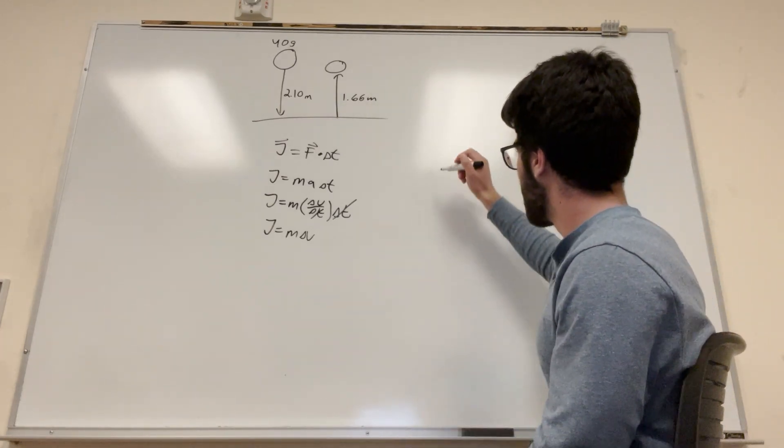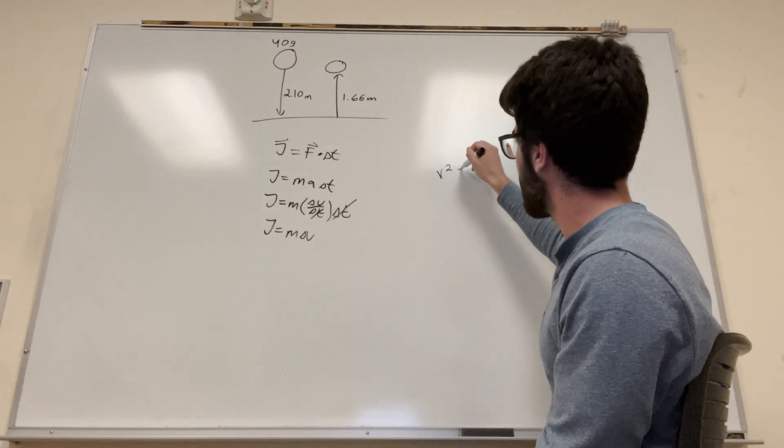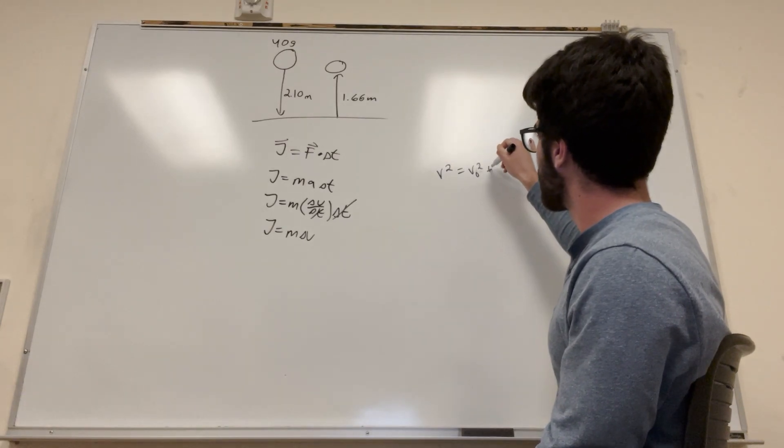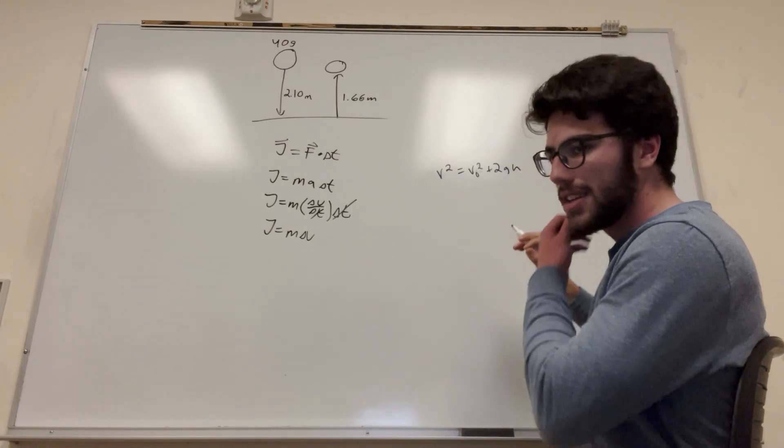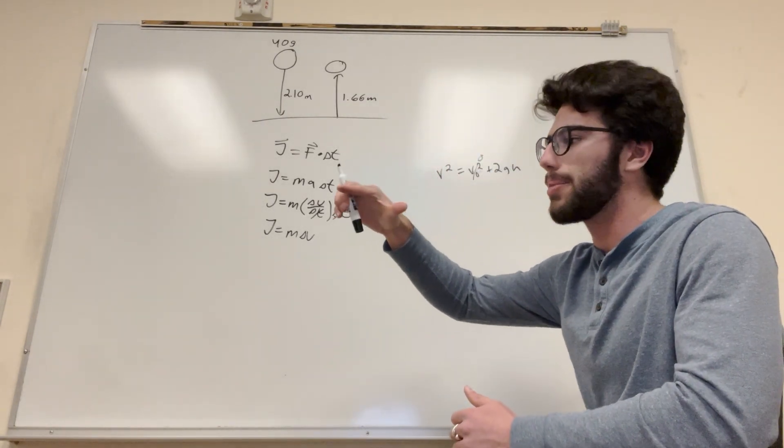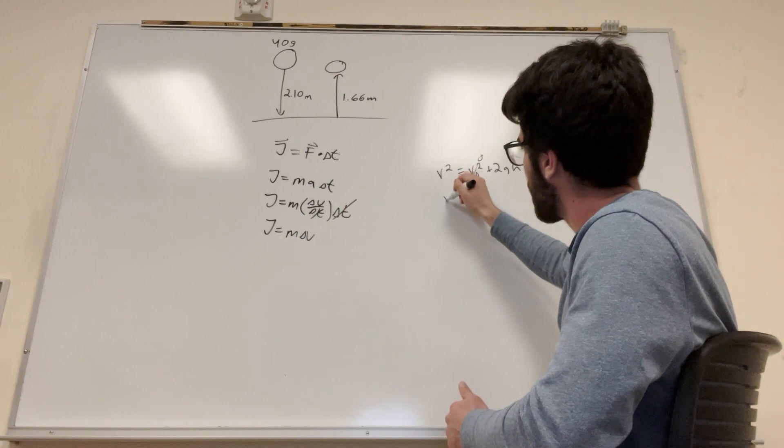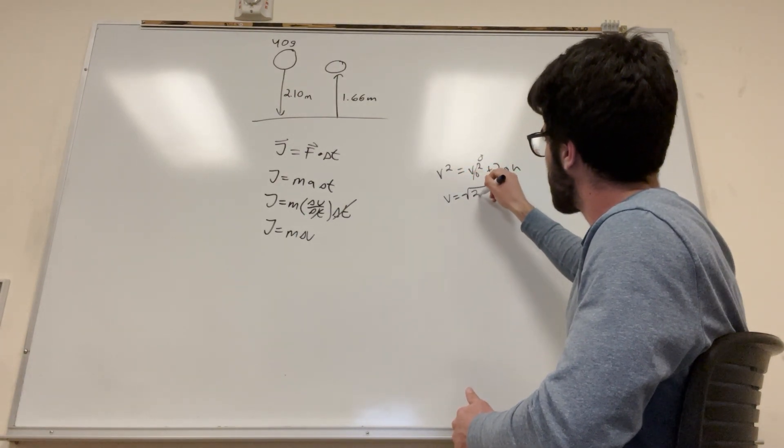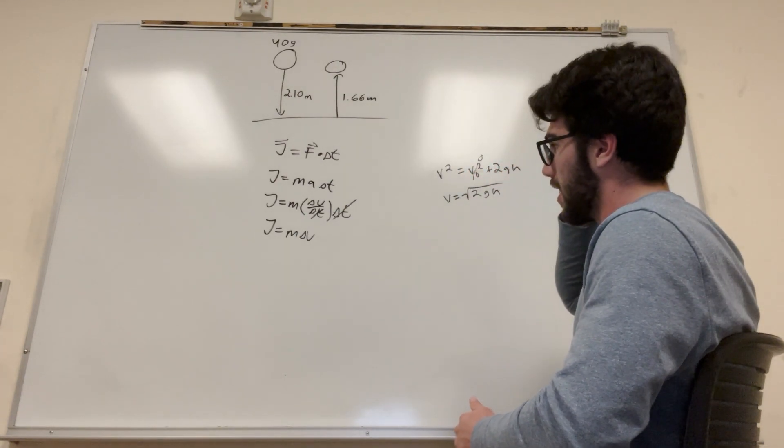What we're going to actually want to use is this equation. So velocity squared is equal to initial velocity squared plus 2 gravity times height. So velocity initial is 0 because you're dropping it. So then we can say velocity is equal to square root of 2 times gravity times height. And this is all stuff we have.